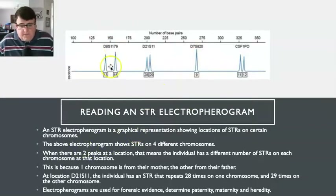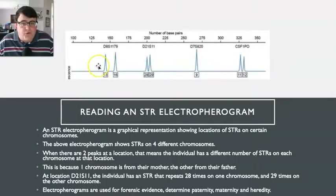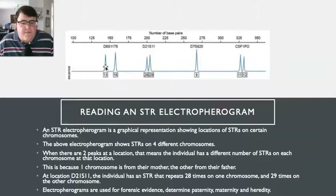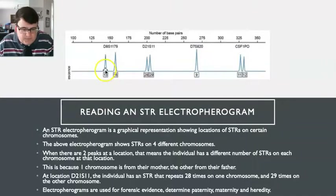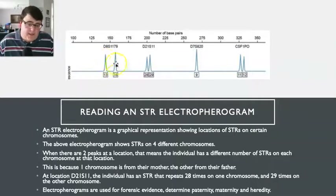This electropherogram has four different locations on different chromosomes. When there are two peaks — you can notice D7S820 only has one peak whereas DAS1179 has two peaks — the reason for two peaks is that we have 46 chromosomes, which is 23 pairs. The individual has a different amount of STRs on each chromosome because you get one chromosome from mum and one from dad. This tells us that on one chromosome at this location the individual has that STR repeating 13 times, and on the other chromosome it's repeating 16 times.